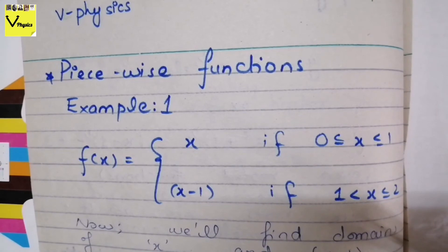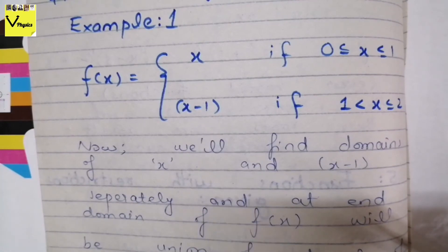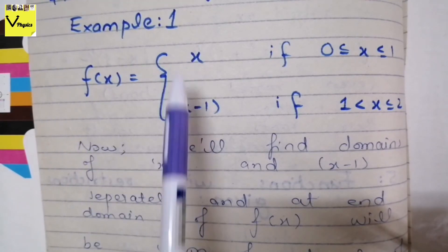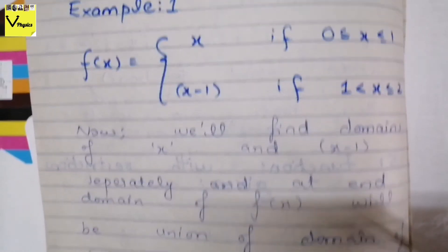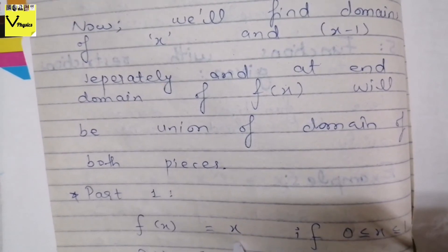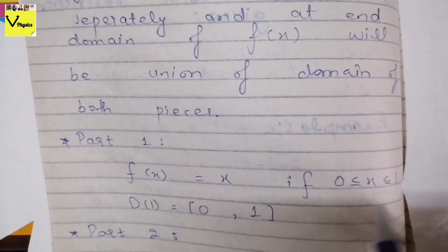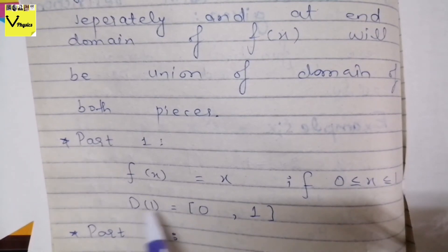For piecewise functions: first, we find the domain of the first piece, then the second piece, then the third piece (if any). After finding them separately, we find the union of all the domains. First, part 1: f(x) = x, with condition 0 ≤ x ≤ 1. The interval given is 0 to 1. Since we have equal signs on both sides, we use closed brackets, so the domain of the first piece is [0, 1].